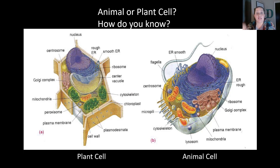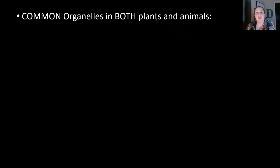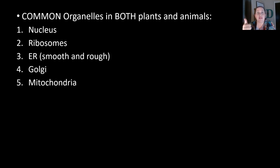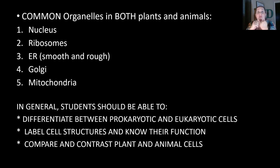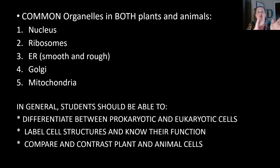As a student studying biology, you should be able to tell the difference between prokaryotic and eukaryotic cells, which we talked about in this video. You should also be able to label cell structures as well as know their function — practice the different organelles and what they do. And compare and contrast plant and animal cells: what do they have in common and what is different? These are the things you should be able to do after finishing this part of biology. If you have any questions or concerns, please don't be afraid to ask. Have a great week.